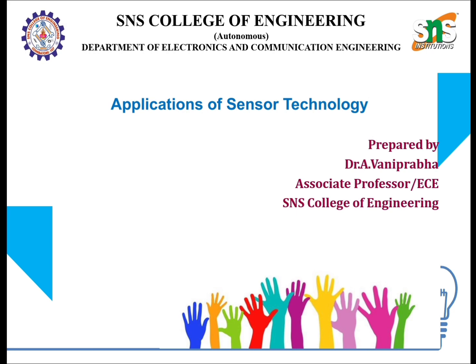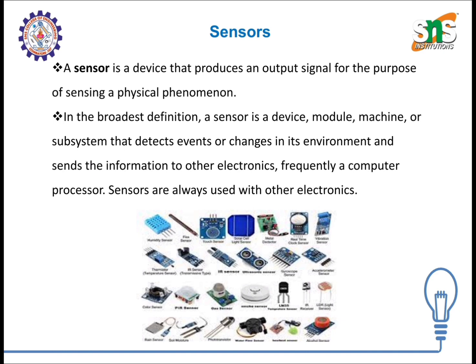First we'll see what a sensor is. A sensor is a sensing device that produces an output signal for the purpose of conveying information or any physical phenomena. In broad definition, a sensor is a device or a small module, a machine or a smaller system that detects events or changes in its environment and sends the information to other electronics, frequently a computer processor.